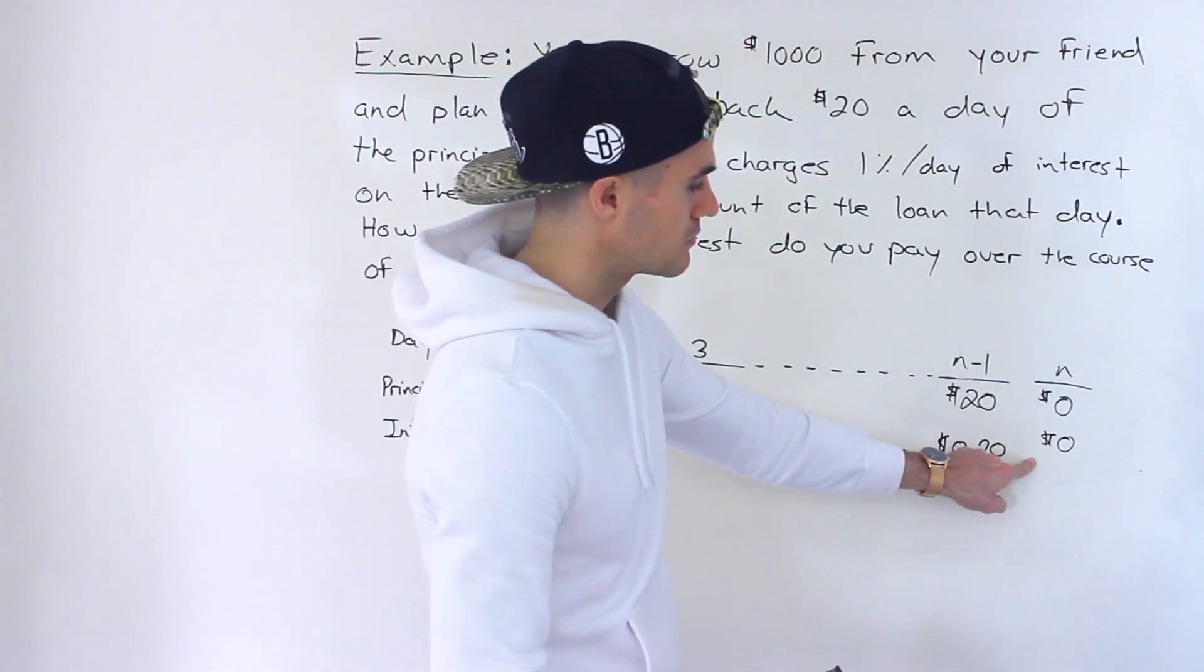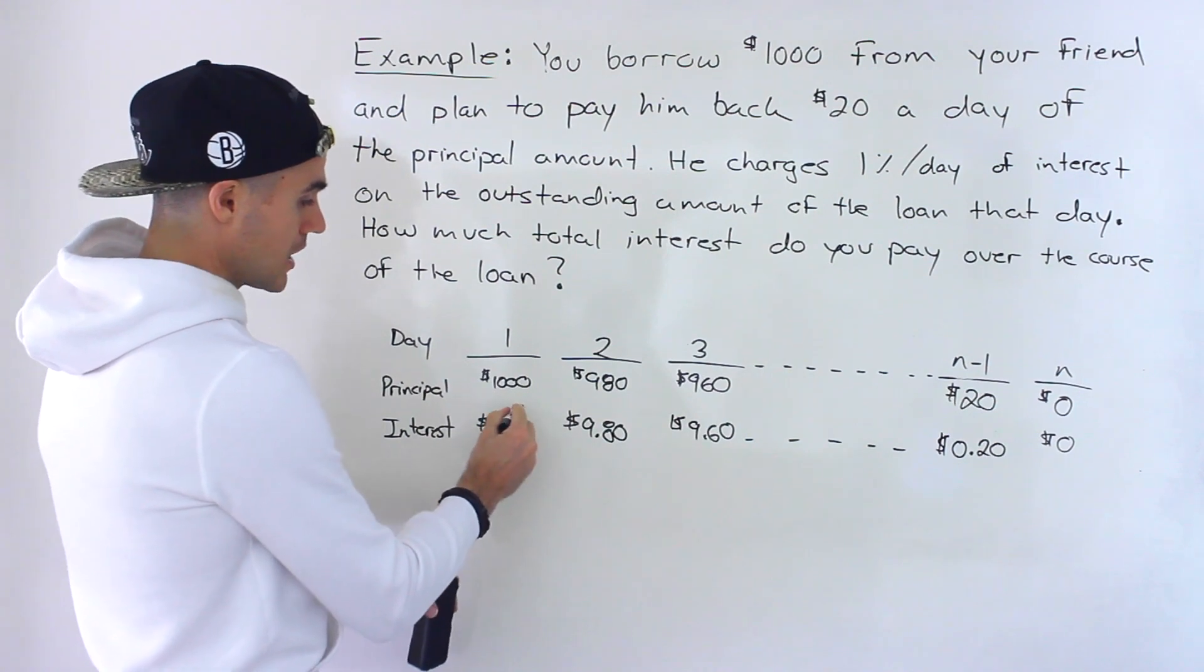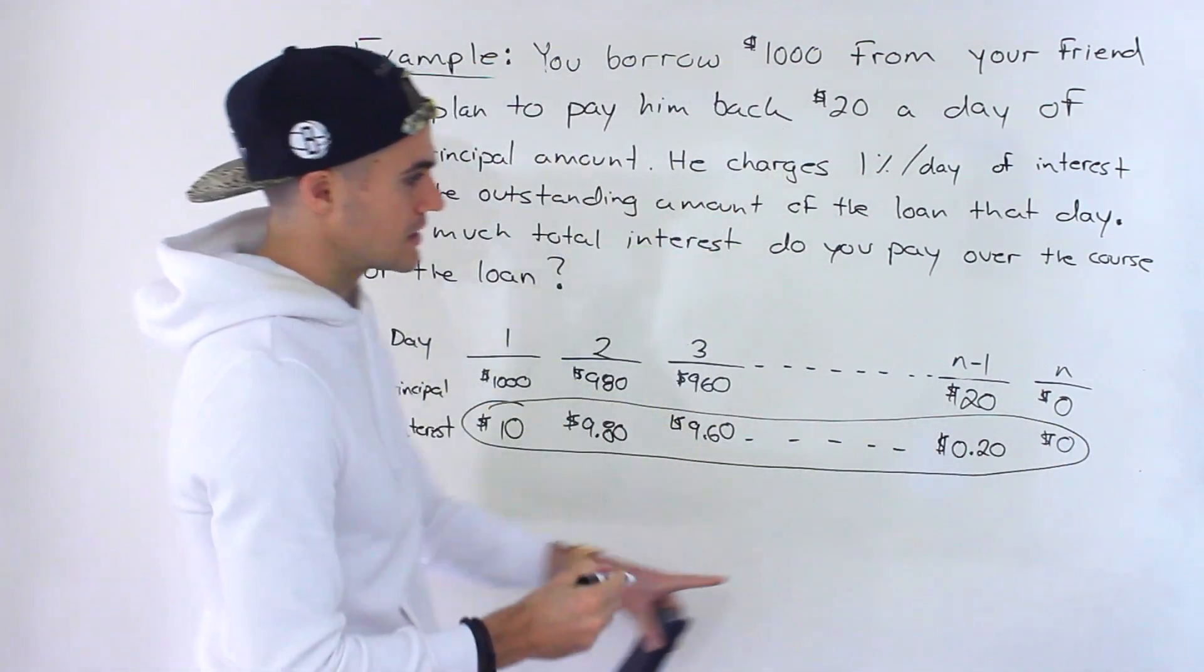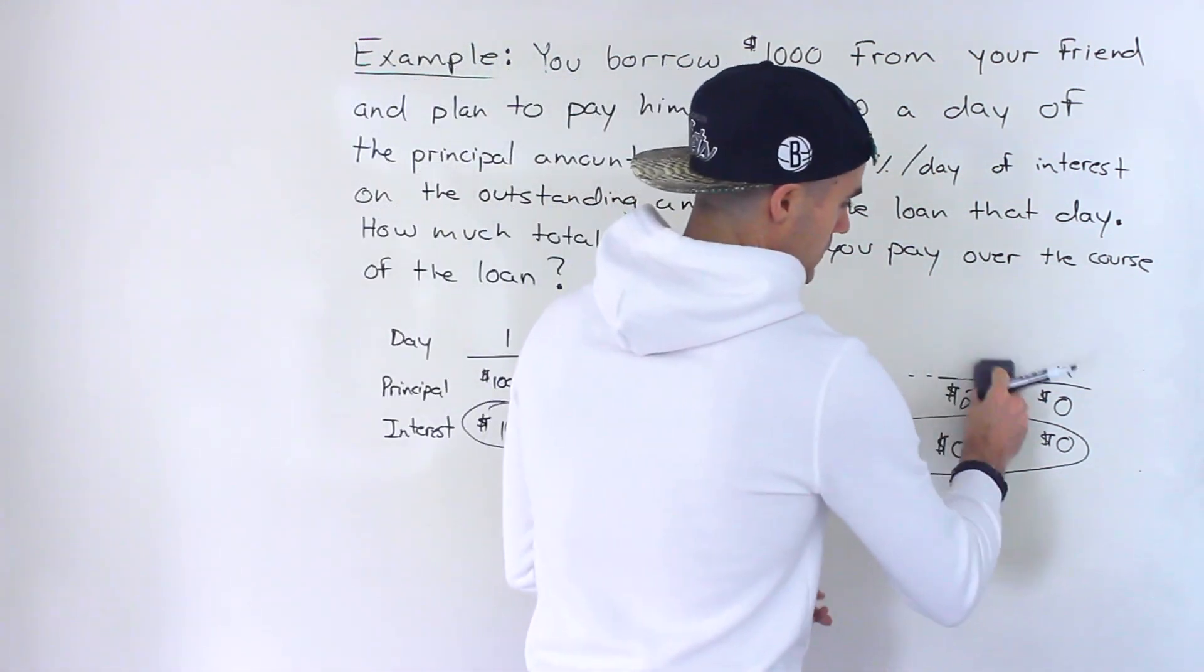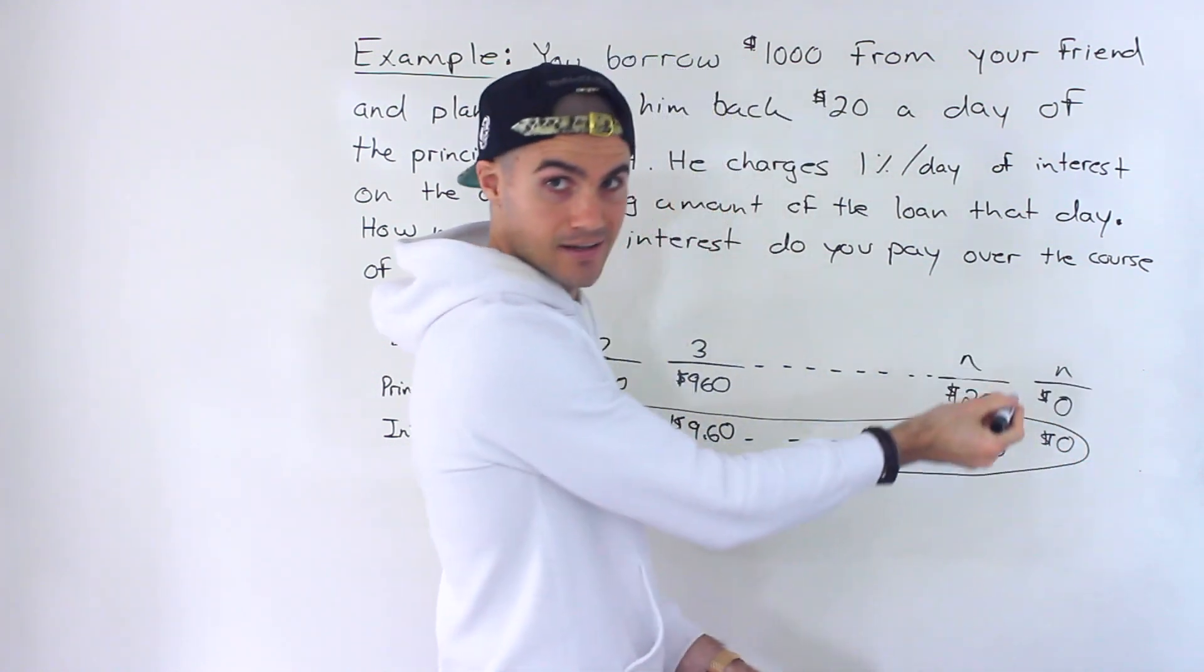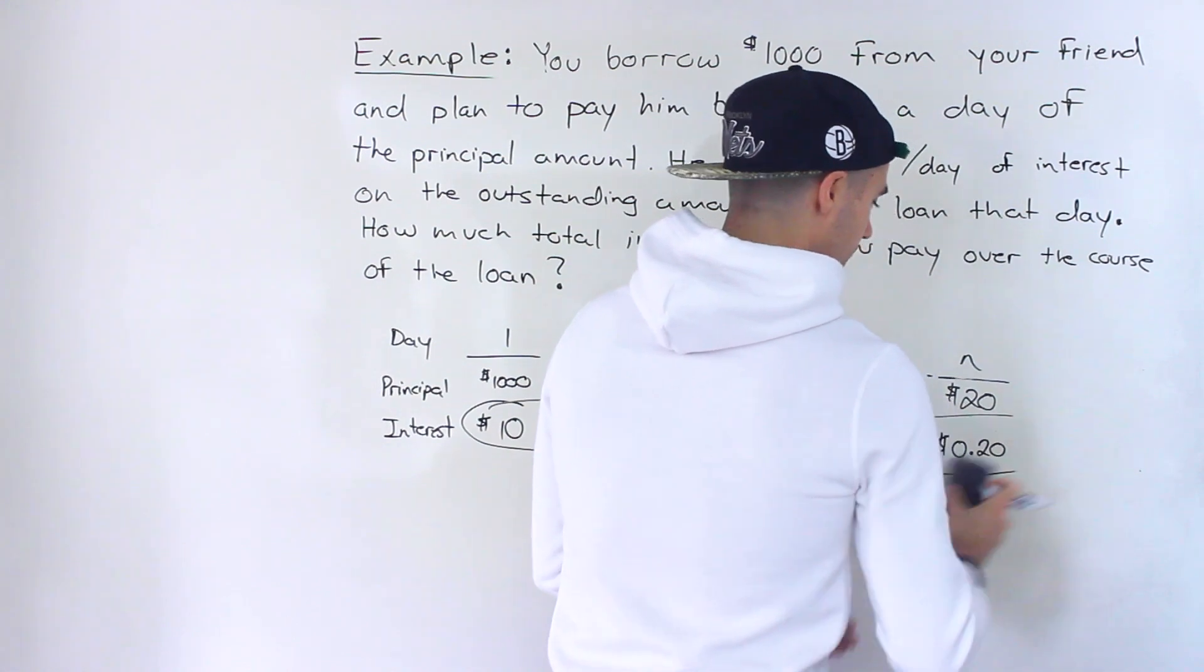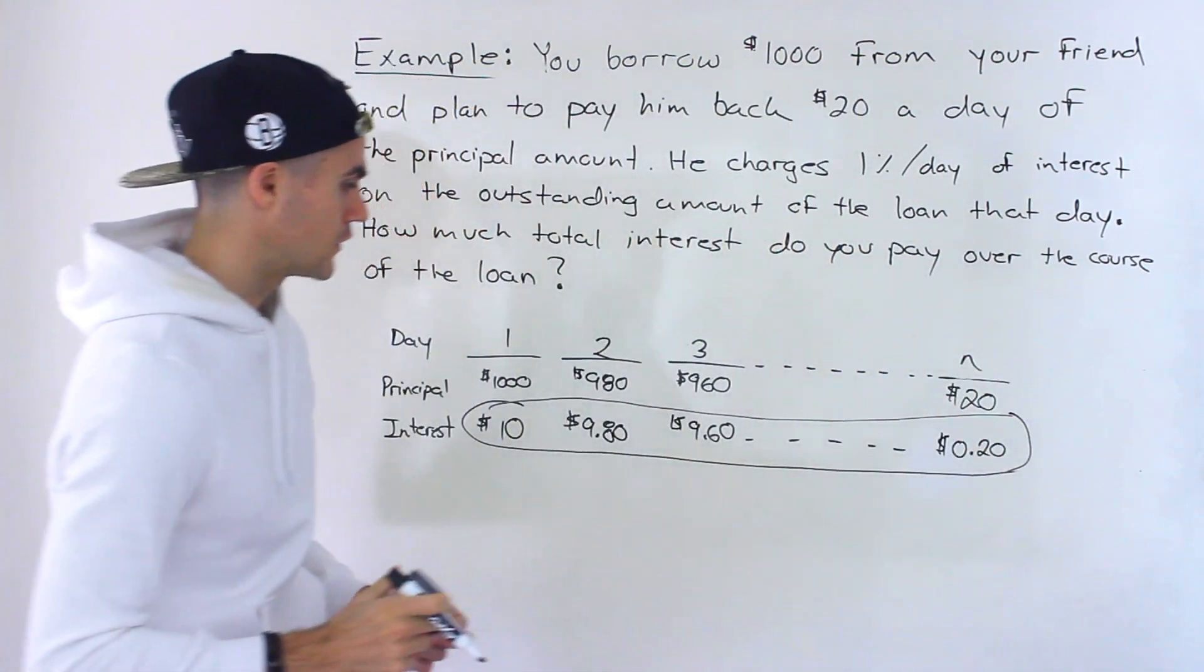So because these are zeros right here, basically what we're going to be doing is we're going to be summing up all of these interest amounts. That's what the question is asking. And because this last value is zero, that's why I was just saying you might as well just let this be N over here because you're just going to be adding zero at the end. So let's get rid of that part right there. So this is going to be N over here.